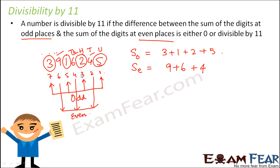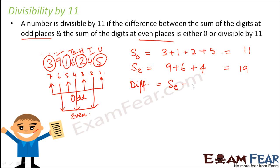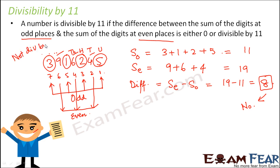Please make sure that you start counting the position of the digits from the right-hand side — that is very important. The sum of the digits at the odd places comes out to be 11 and the sum of the digits at even places comes out to be 19. So now we need to calculate the difference: sum even minus sum odd, that is 19 minus 11, which is 8. This 8 is neither 0 nor divisible by 11, so therefore this number is not divisible by 11.